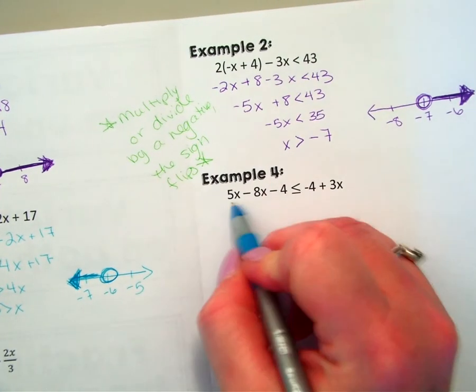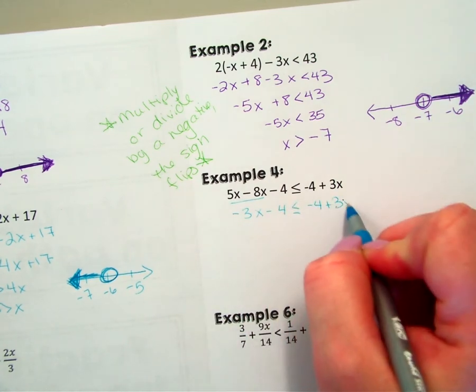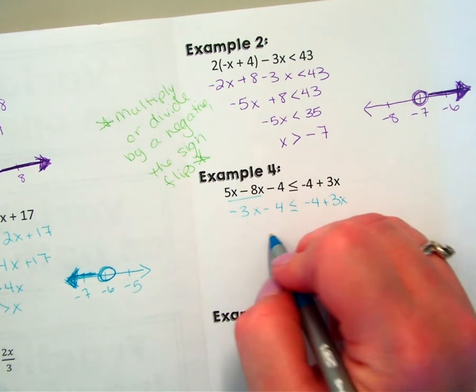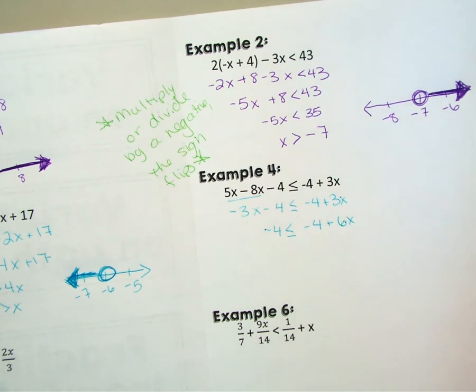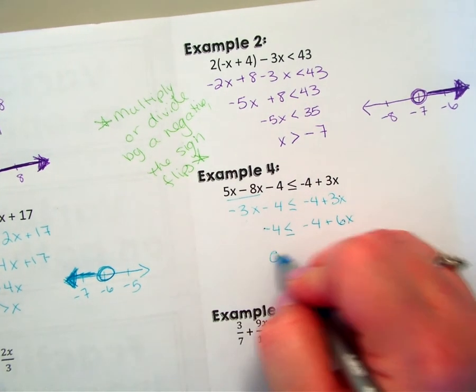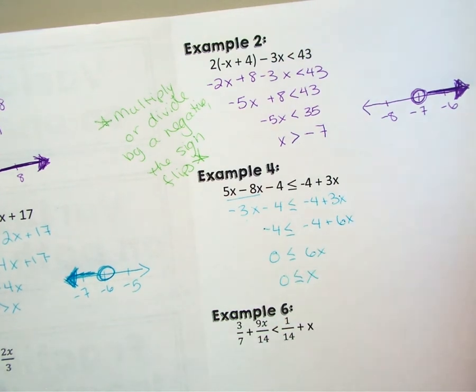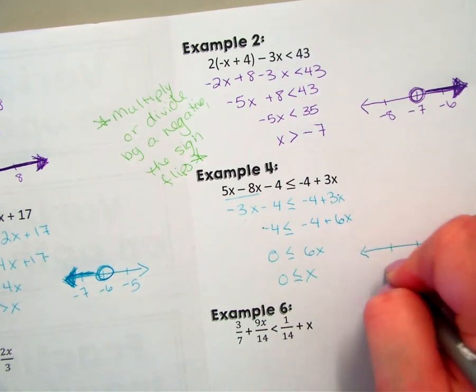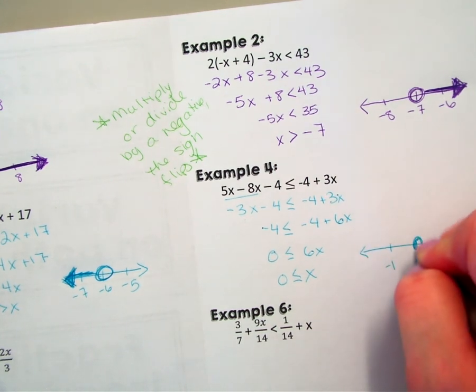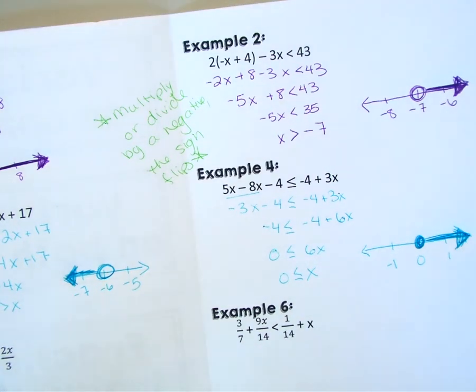Trying the next one, combining these I get negative 3x minus 4. I want to add this 3x over, so that makes me 6x. Add my 4s, that's going to end up giving me a 0. So divide by 6, I still have 0. So x is greater than or equal to 0. So filled in circle, this is going to go to the right. Again, it is greater than.